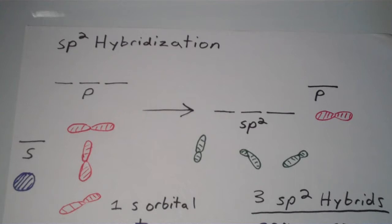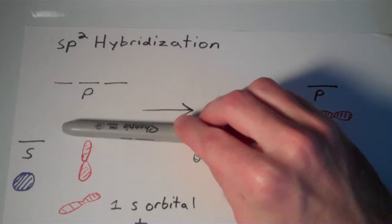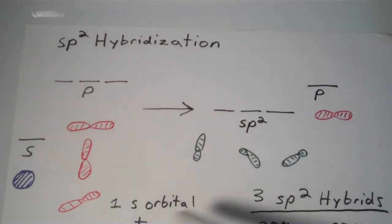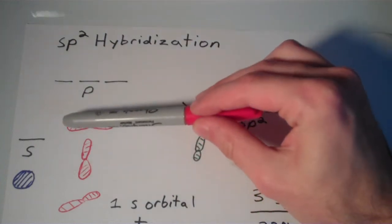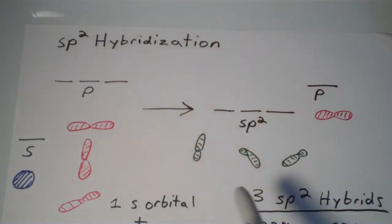So with sp³, the s orbital combined with three of the p orbitals, all three of them, to make four sp³ hybrids. Well, sp² hybridization is when the s orbital combines with only two of those p orbitals. It leaves the other one alone. The other one is along for the ride and unhybridized. And the s orbital combines with two p orbitals to make three sp² hybrid orbitals.